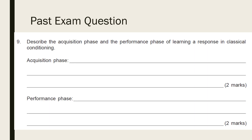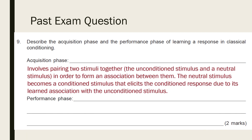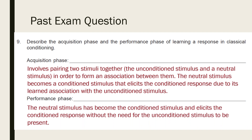Let's practice explaining and applying these concepts with some past exam questions. Starting with a question that just requires you to describe these two phases of classical conditioning — pause the video while you attempt the question. In short answer questions you can write your answer in dot points, and there's no need to rewrite the question. The acquisition stage involves pairing two stimuli together, the unconditioned stimulus and a neutral stimulus, in order to form an association between them. The neutral stimulus becomes a conditioned stimulus that elicits the conditioned response due to its learned association with the unconditioned stimulus. In the performance phase, the neutral stimulus has become the conditioned stimulus and elicits the conditioned response without the need for the unconditioned stimulus to be present.